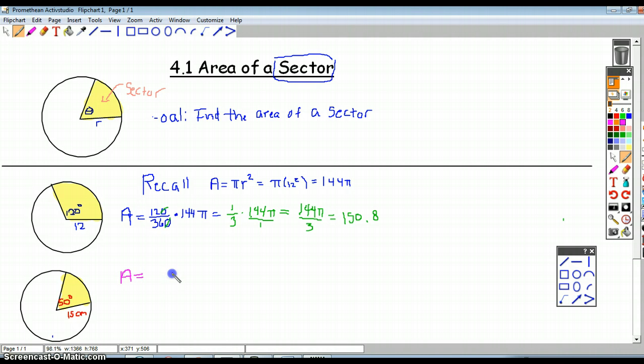We're going to multiply times the area of the entire circle whatever fraction of the area that this sector is taking up. The area of the entire circle is π times r squared, which is 15 squared.